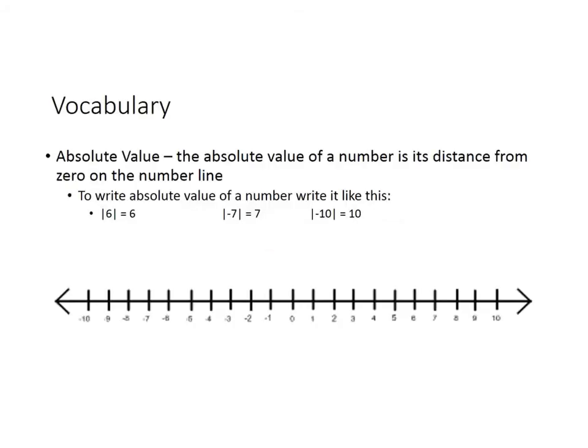Let's work on some vocabulary. Absolute value — we discussed this in the movie a couple of days ago — but please remember that the absolute value of a number is its distance from zero on the number line. To write the absolute value of a number, you write it with those two lines on either side. Absolute value is always positive — it's just how far it is away from zero. So the absolute value of 6 is 6, and the absolute value of −7 is 7, because negative seven is seven points away from zero.